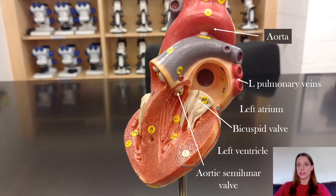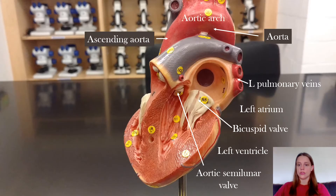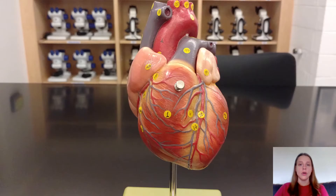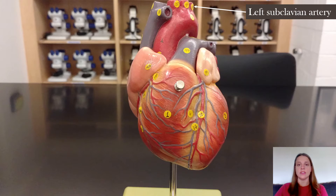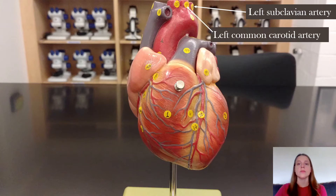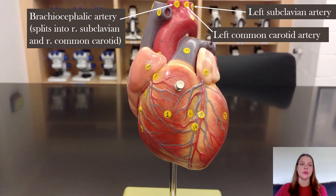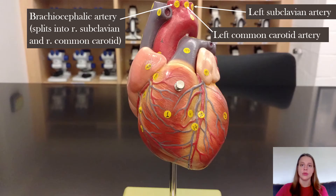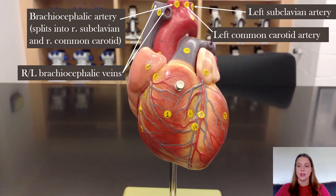The aorta is the largest artery in the body, so it has different names for different regions. Here we can see the ascending aorta and the aortic arch. Coming off of the aortic arch there is the left subclavian artery, the left common carotid artery, and the brachiocephalic artery, which splits into the right subclavian and right common carotid. And just as a reminder, these are your right and left brachiocephalic veins — oftentimes veins and arteries will have the same name.